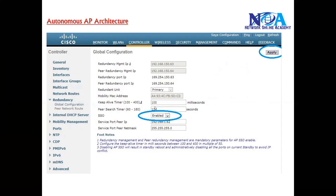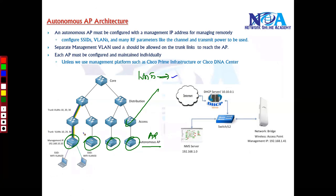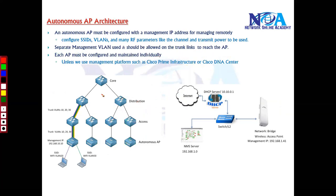This has to be done individually for each and every access point, because in the autonomous architecture each access point is managed individually. You need to log in to each access point and configure all the parameters. One option is to log in directly, or you can use management tools like Cisco DNA Center — which is now replacing Cisco Prime Infrastructure. With these centralized management platforms you can manage all access points from a single place. Without such a platform, you have to go to each individual access point to manage them.